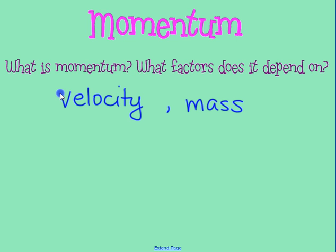Momentum is not something that's easy to define. In physics, we define momentum with its equation. Momentum, represented by the letter p — lowercase p — is an object's mass times its velocity. That's its definition.